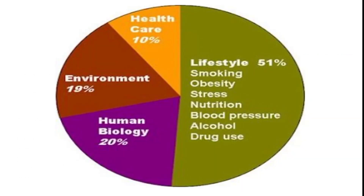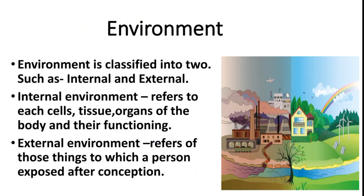Next are the economic factors or conditions. Socio-economic conditions also directly or indirectly influence health status. For example, if a person's income is less relative to their family size, they cannot fulfill the nutritional needs of all family members. If a family has 6 or 7 members but only one earning member with a low income, the family cannot afford the nutritional value required for all members. Due to poor nutrition, the health status of those family members deteriorates — also affected by occupation and education.